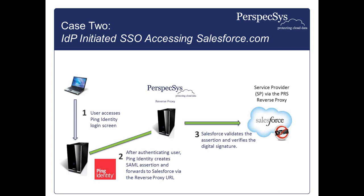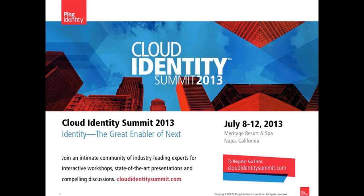The other model is identity provider initiated SSO, where the user first connects and authenticates with Ping. When the authenticated user selects Salesforce — an application that the IT group has set up as accessible — Ping creates the SAML assertion and forwards it to Salesforce via the Perspexis reverse proxy. Like the previous example, Salesforce validates the assertion and verifies the certificate signature, permitting the user to connect. In both scenarios, all this is happening behind the scenes from an end user perspective, creating a layered security solution that gives the access and data location control that enterprises need to confidently move to the cloud.